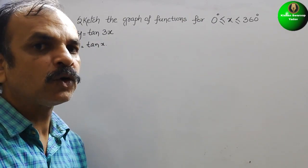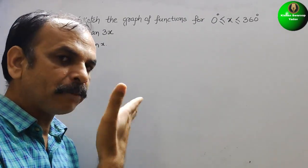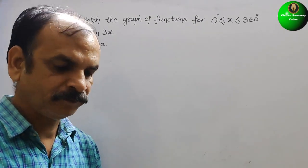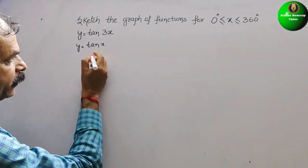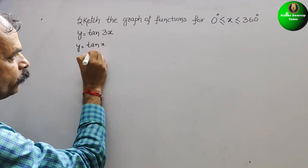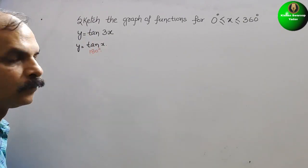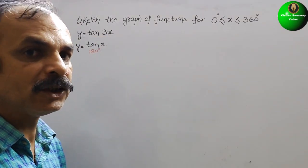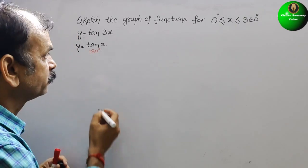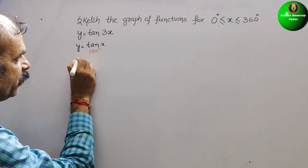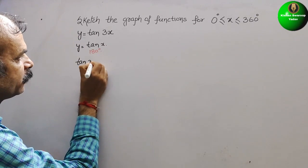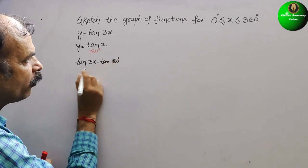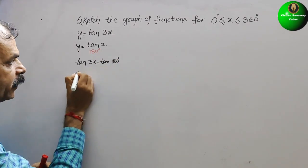We also know that for tan, one complete cycle — that is, one period — is 180°. And here they have given tan 3x. So what we have to do: 3x = 180°, or we can say tan 3x = tan 180°. Now comparing, 3x = 180°.